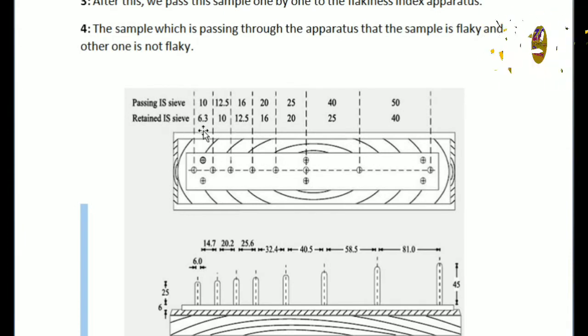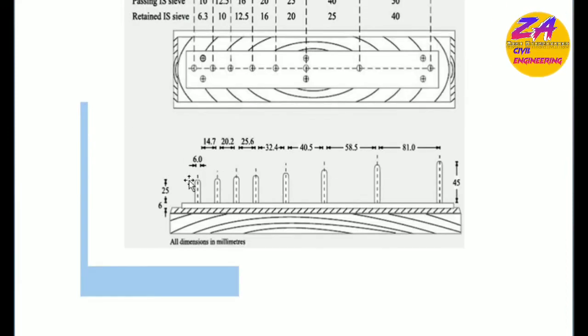So this is the shape of apparatus of flakiness index. These are holes with diameters 6.3, 10, 12.5, 16, 20 millimeters. These are the dimensions of these holes there.